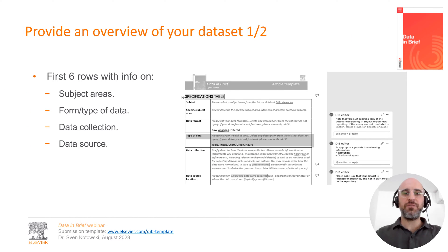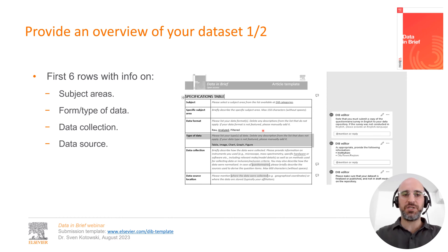Following the article information, the specifications table provides a concise overview of your data set. The table is divided into eight rows and two columns. The left column provides headers for each row, while you provide information inside the right column. As before, you replace the text in blue italics with your own data set descriptions, and the DiB editor comment boxes provide you with valuable information and hints.